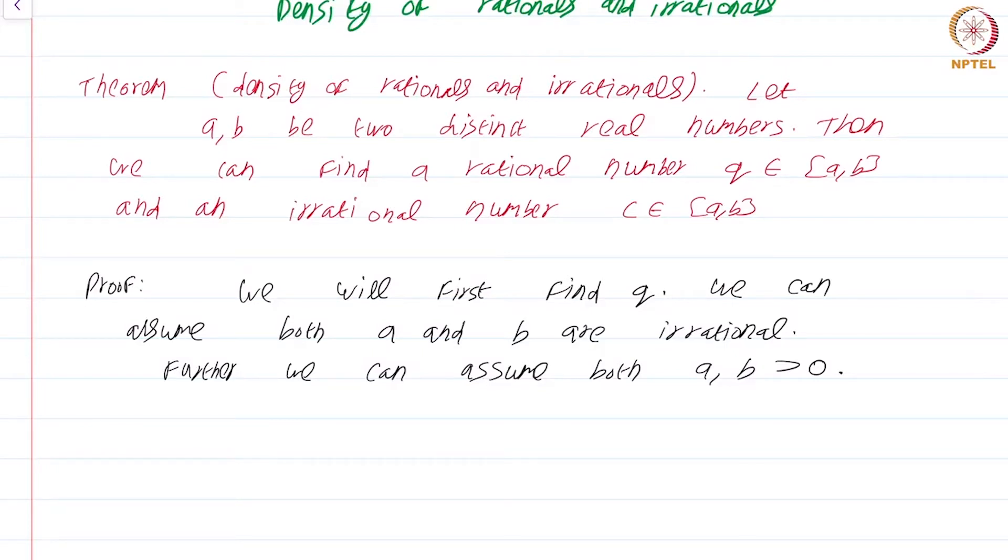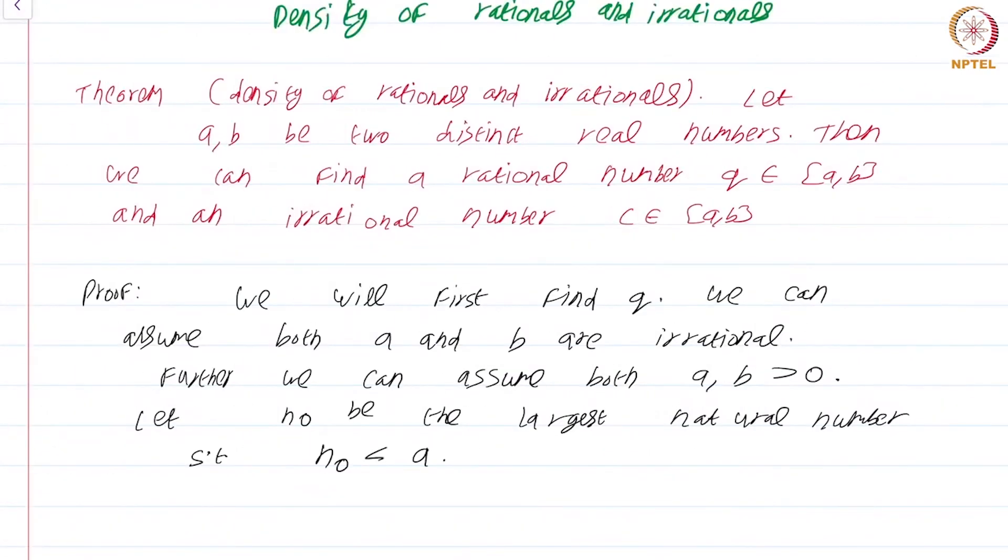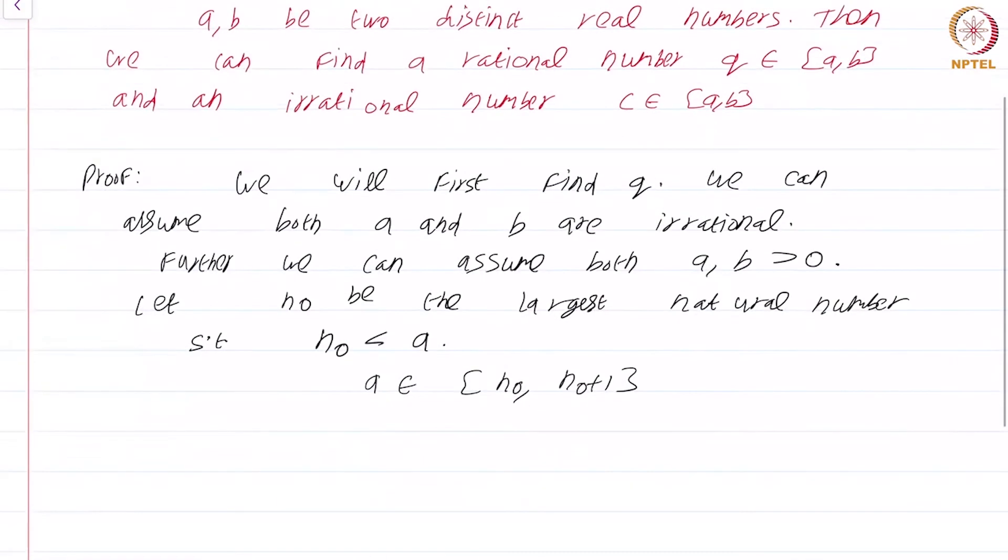I leave it to you to check what would happen in the other possibilities for a and b. I will just tackle this case. Let n₀ be the largest natural number such that n₀ is strictly less than a.